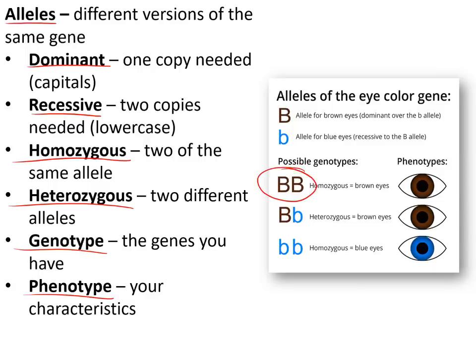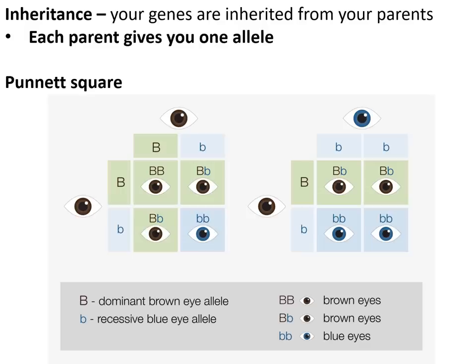For example, a person who is homozygous dominant has two copies of the same dominant gene — that is the genotype — and the phenotype is brown eyes. A person who is homozygous recessive has two recessive alleles and will have blue eyes. A person who is heterozygous has one copy of each allele and will show brown eyes. You get one allele from each parent, and this can be shown with a Punnett square — for example where both parents are heterozygous (Bb), you can see the different combinations of offspring genotypes.